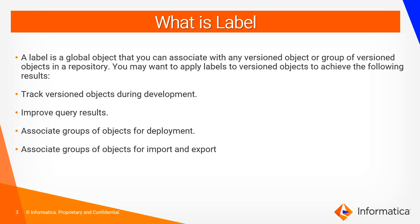What is a label? A label is a global object which can be associated with one or a group of objects in a versioned repository. Labels are used to track versioned objects during deployment, to improve the query results, to associate a group of objects for deployment, and to associate a group of objects for import and export.